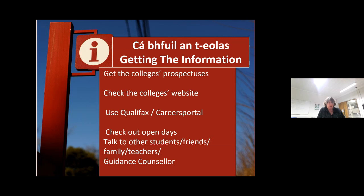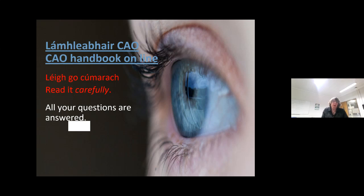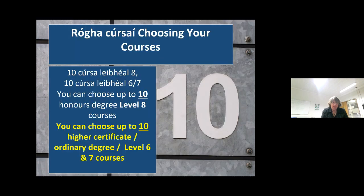Also consider what extracurricular activities are available — if they're very sporty, big into music or arts, or have other important hobbies and interests. Also online — and unfortunately the CAO are not printing a handbook anymore, so it's all online — but every item of information that you would need is available online in this handbook. So it's very important to read, particularly the yellow pages, which give all the information. It has all of the information regarding deadlines, and then all of the college courses are there.